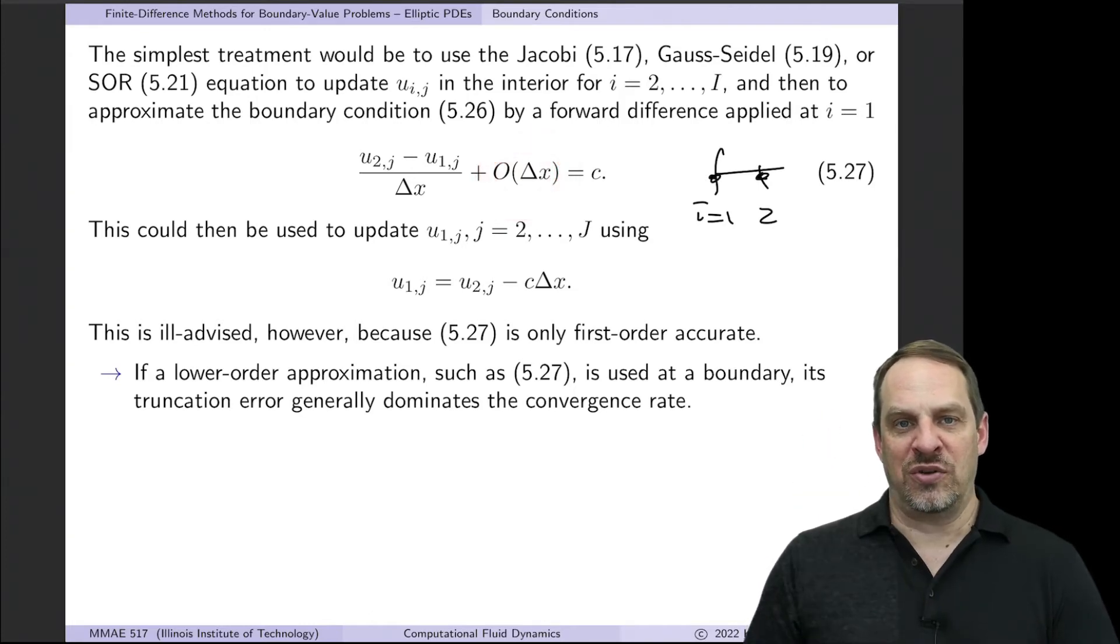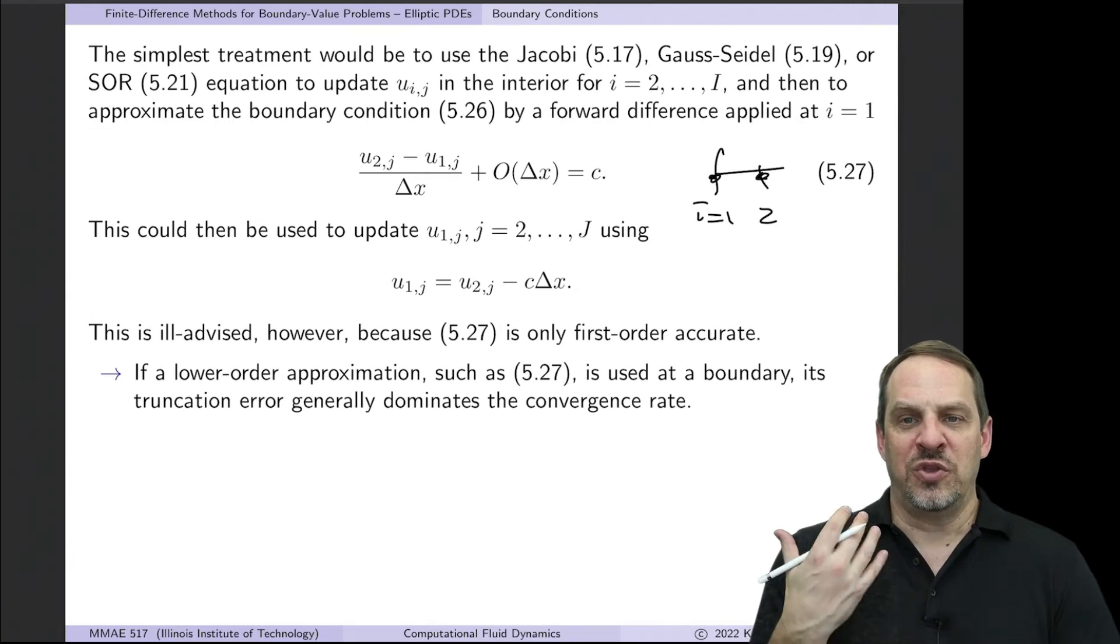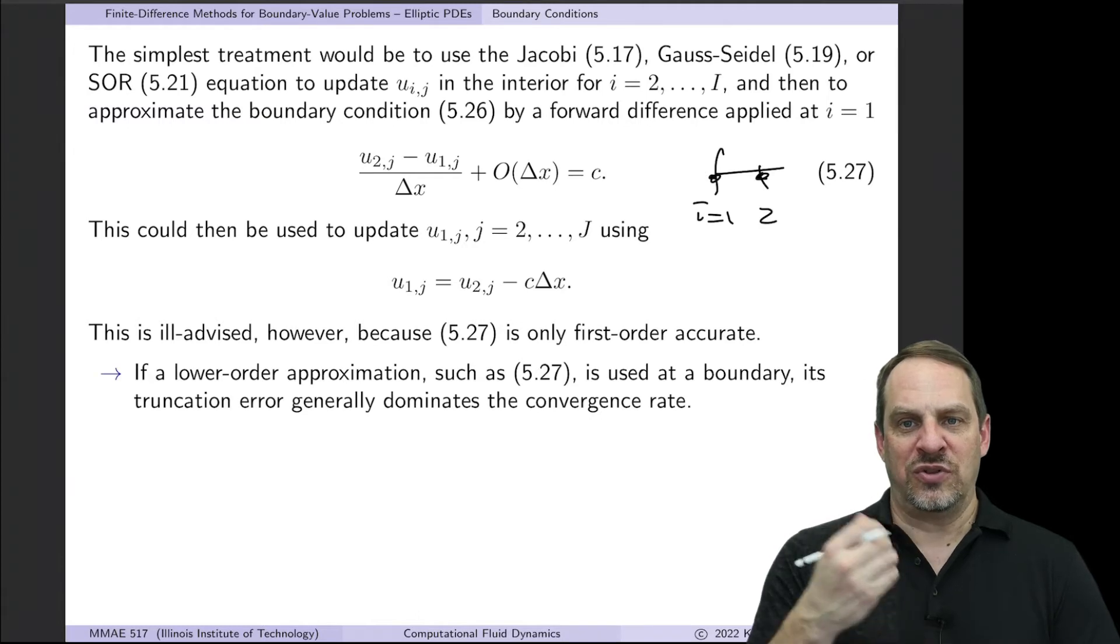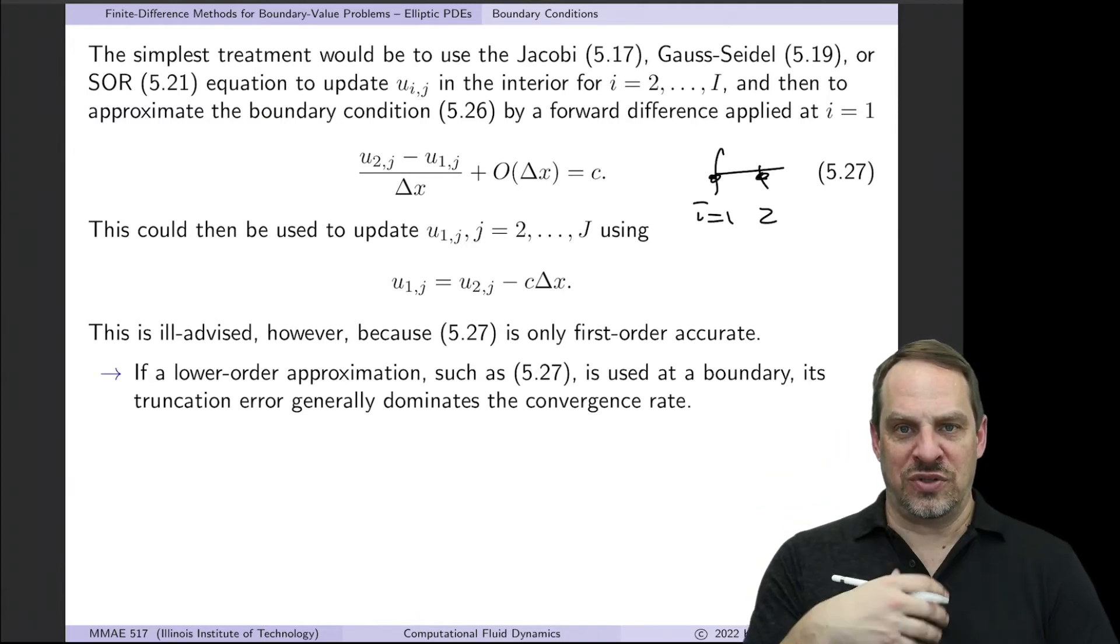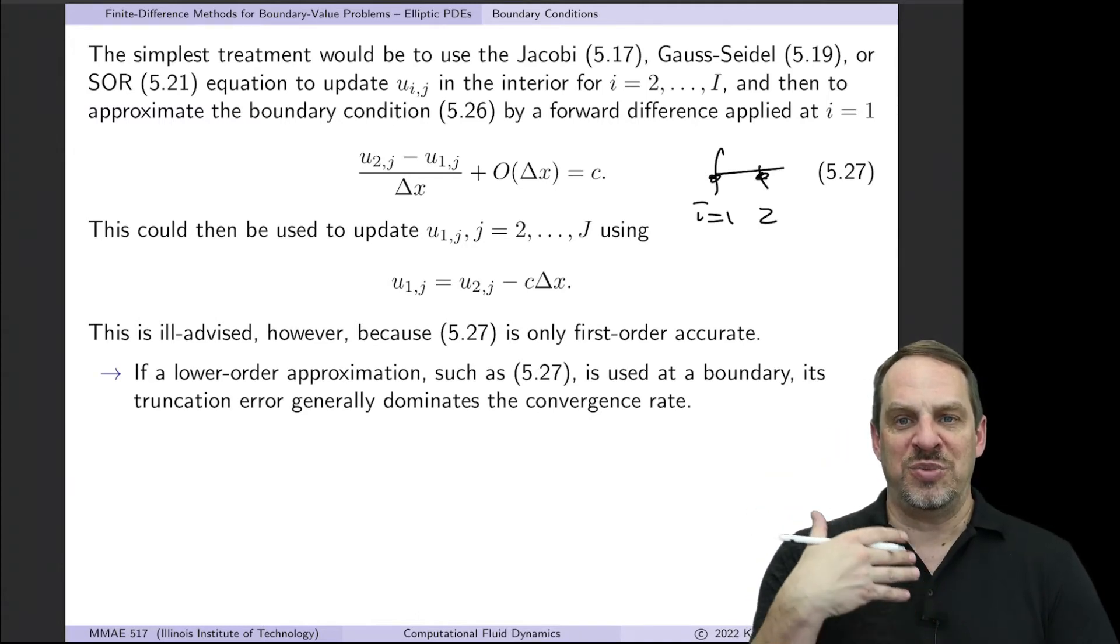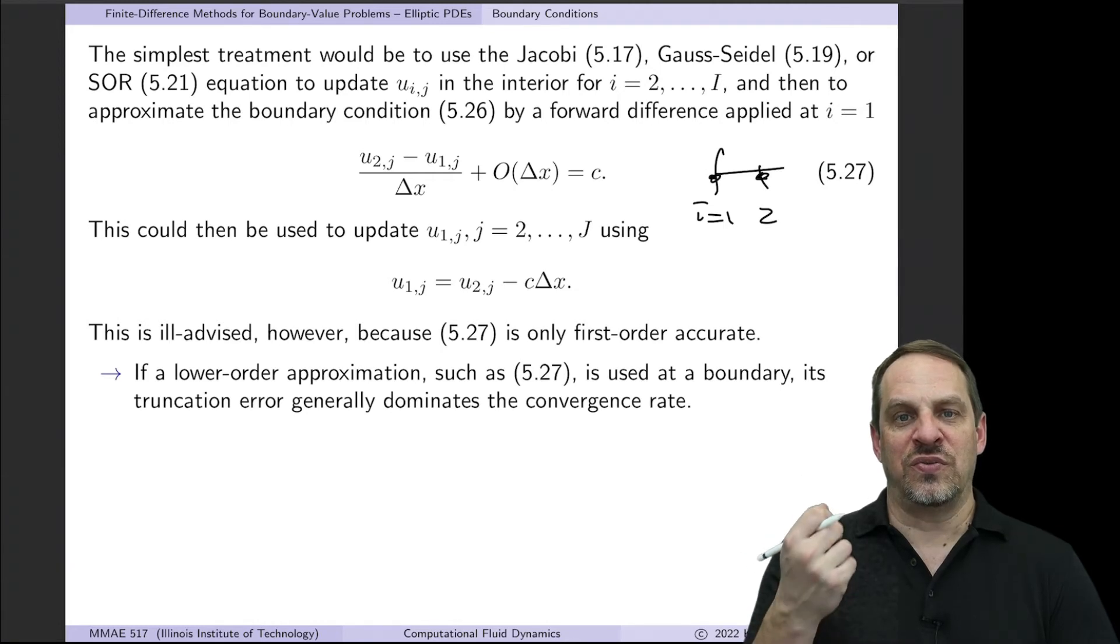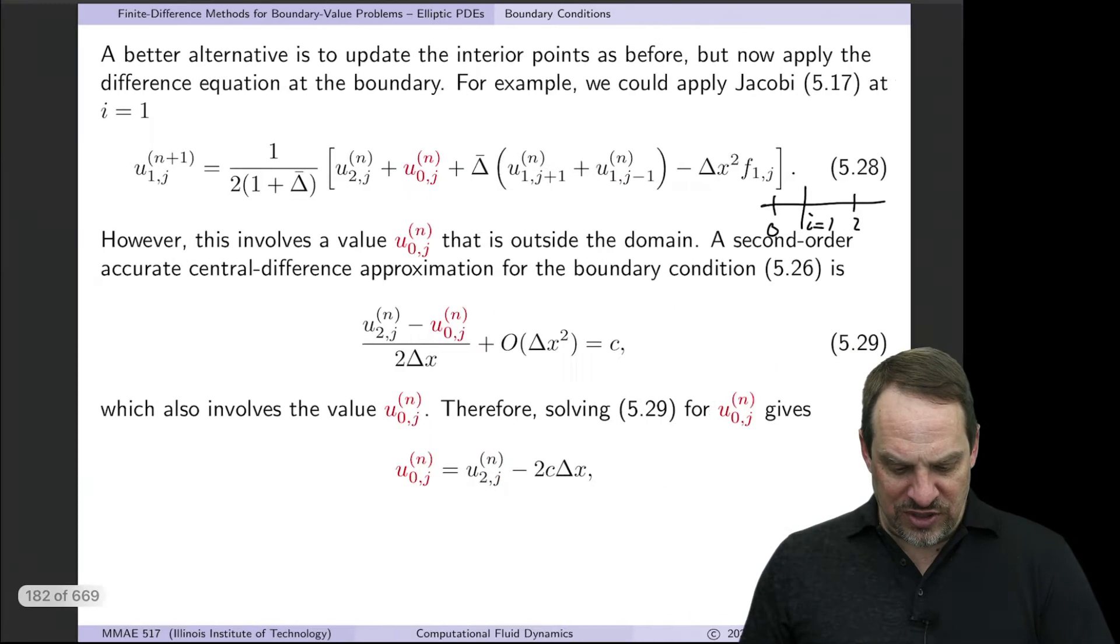The problem is basically everything reverts to the lowest common denominator. So you want the order of the approximations in terms of the truncation error to be consistent throughout your domain. So if you're using second order accurate finite differences for the interior, you want to use second order accurate central differences for the boundaries as well. So let's show how to do that.